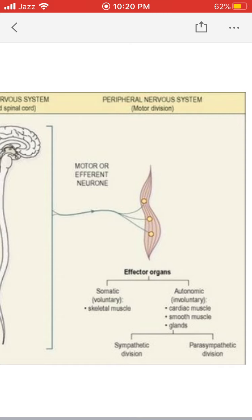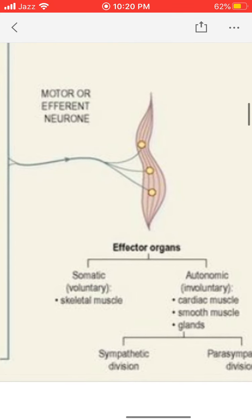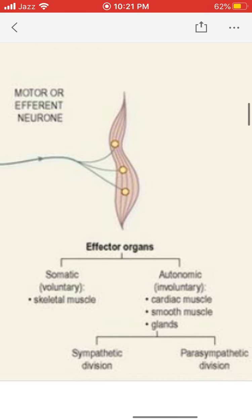The effector organs are of two types: voluntary organs and involuntary organs. Voluntary organs include skeletal muscles — organs that are under our conscious control. The other types of effector organs are cardiac muscles, smooth muscles, and glands, which cannot be controlled by our will and are under unconscious control.